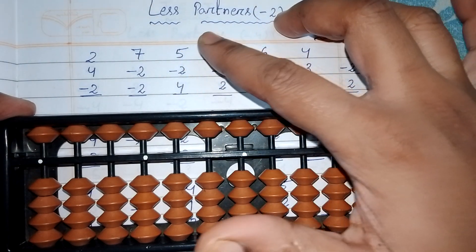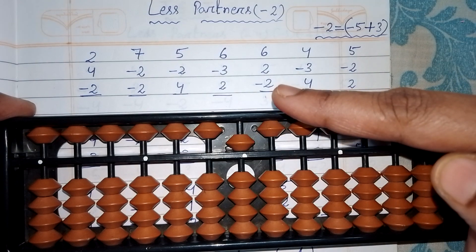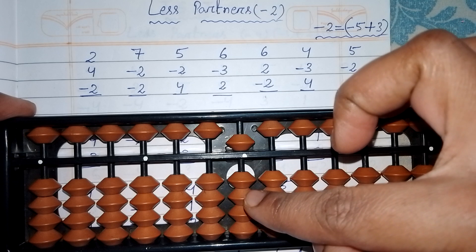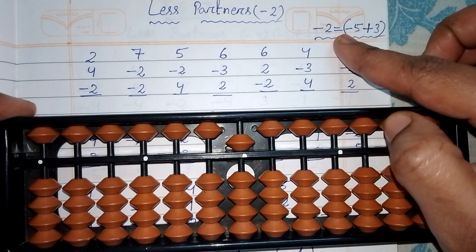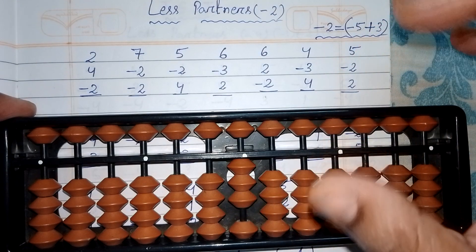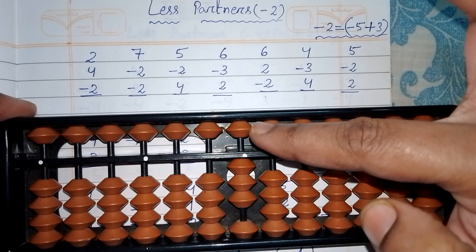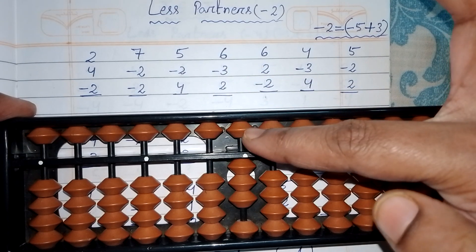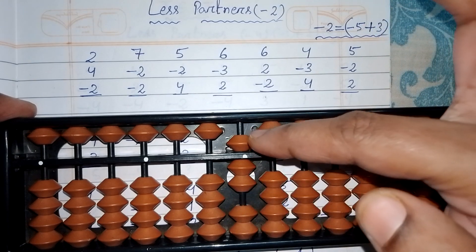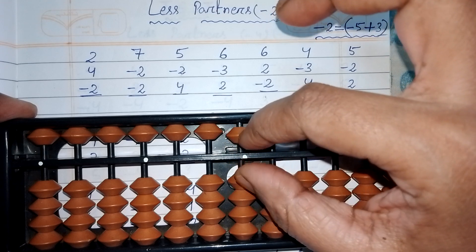Third question: 5-2+4. Add five with your index finger — for addition or subtraction of five, always use the index finger. For less two, we don't have two bits for subtraction, so partner of less two is three: push up five and push up three. For adding four, partner of four is one, so pull down five and pull down one. Answer is seven.